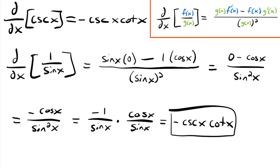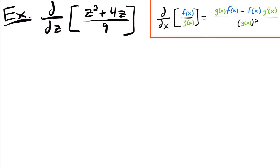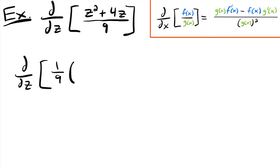Hopefully you were able to follow that — it's cool how we can prove these derivative rules using the quotient rule. Now let's look at a regular example not involving trig. We have the derivative with respect to z of z squared plus 4z divided by 9. This is an important one: just because you see a quotient doesn't always mean you need the quotient rule. Here we just have a constant coefficient of 1/9 — if we pull it out, we just have a power rule function with no variables in the denominator.